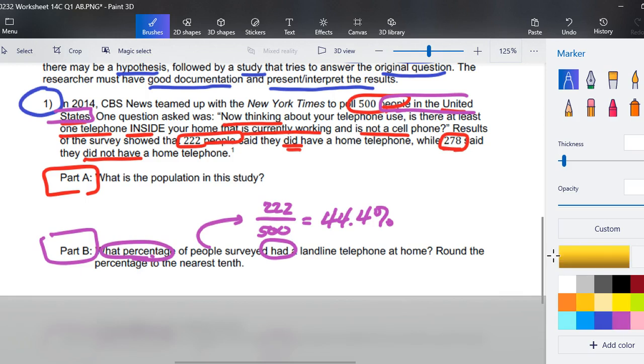I want to go ahead and answer Part C while we're here. Part C says, what percentage of the people surveyed did not have a landline telephone at home? Round that percentage to the nearest tenth. At this point, we could take the other part from 100%. But if we haven't double-checked that we truly have a sum of 500, then let's go ahead, take our people who do not have a landline, divide the 278 by 500, and when we multiply by 100, we get 55.6 percent. I'm going to add that to our 44.4 percent and we're at 100%.